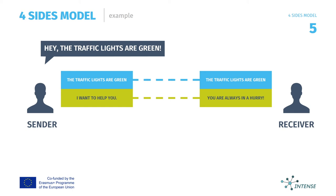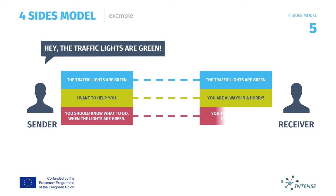Second, the layer of self-revelation. Maybe the sender intended to help the receiver — the sender may have meant 'I want to help you.' But it could very well be that the receiver understood a very different thing on that layer: 'Oh, you're always in a hurry.'